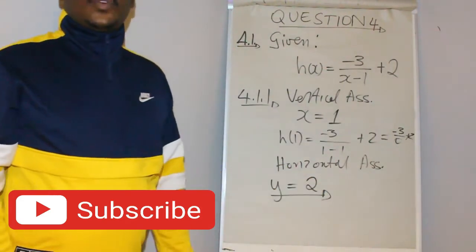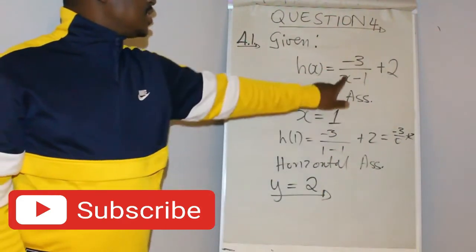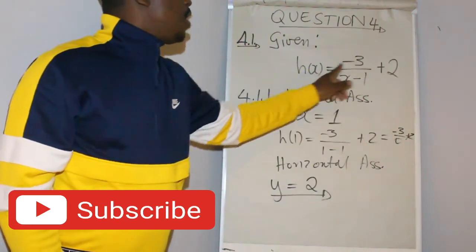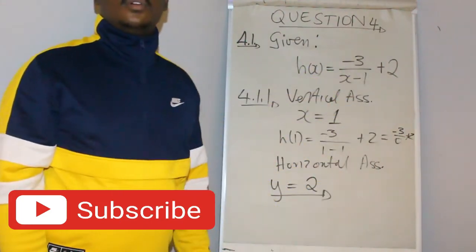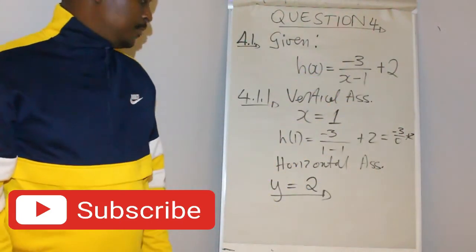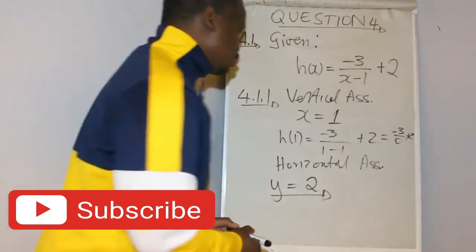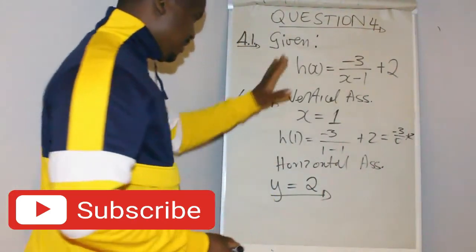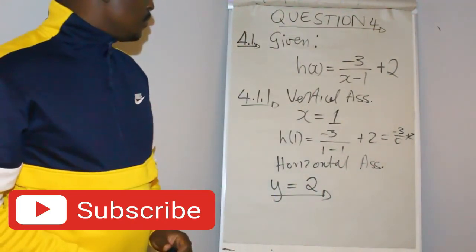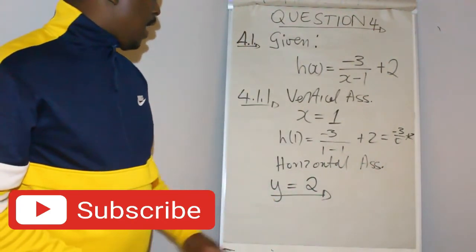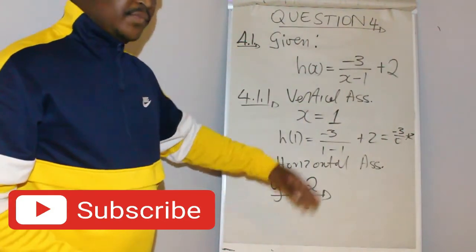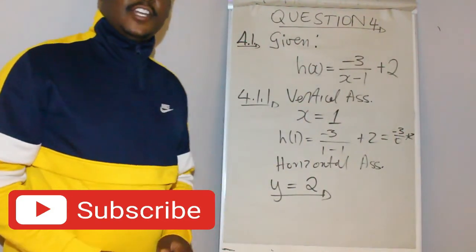So to summarize: the two asymptotes are x is equal to 1 (vertical asymptote) and y is equal to 2 (horizontal asymptote).